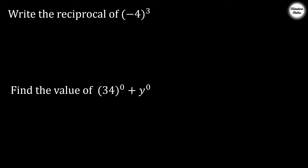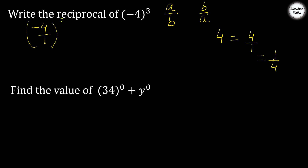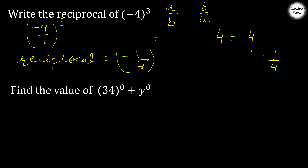Now find the reciprocal of minus 4 raised to power 3. The reciprocal of a/b is b/a. We can write 4 as 4/1, so its reciprocal is 1/4. Similarly, we write minus 4 as minus 4/1, whole raised to power 3. The reciprocal of minus 4 raised to power 3 is therefore minus 1/4 whole raised to power 3.